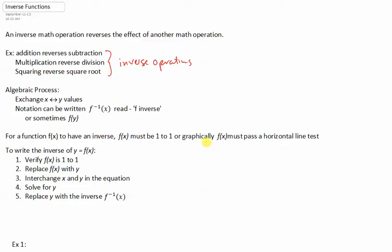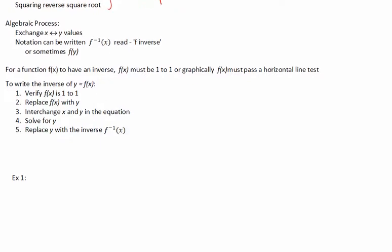To write the inverse of a function, y equals f(x), there are five things to do. First, verify that f(x) is 1 to 1, so that the inverse will be a function. Second, replace f(x) with the letter y. Next, interchange every x and every y that you see in the equation. Then we solve for y, and lastly, that y is replaced with the notation f inverse, or the f with the negative 1 superscript. So we'll work through two examples.